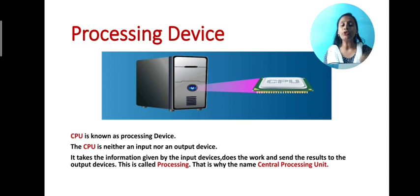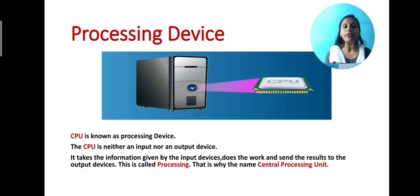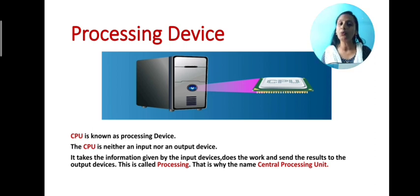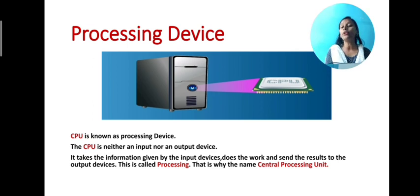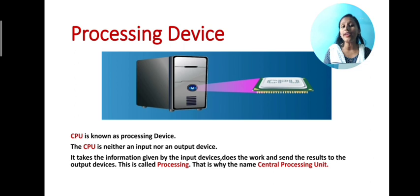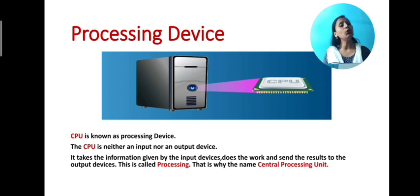What do you mean by processing device? The device is CPU. CPU is known as a processing device. The CPU is neither an input nor an output device. It takes the information given by the input devices, does the work and sends the result to the output devices. This is called processing. That's why CPU is named as Central Processing Unit. The full form of CPU is Central Processing Unit.